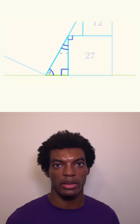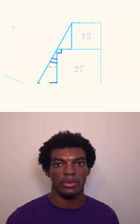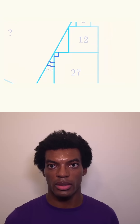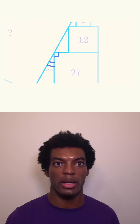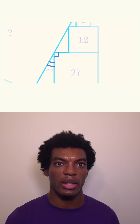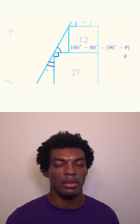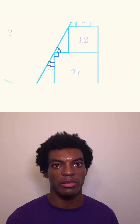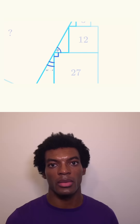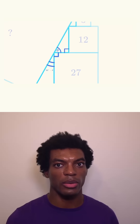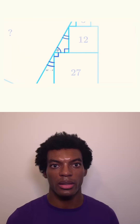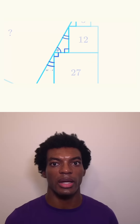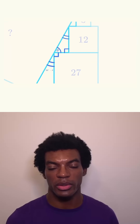Because this angle inside the square is 90 degrees and this angle is 90 minus theta, we know that this angle must be 180 minus 90 minus (90 minus theta), which simplifies to theta. Accordingly, we find that all of the angles in the middle triangle are congruent to the angles in the bottom triangle.